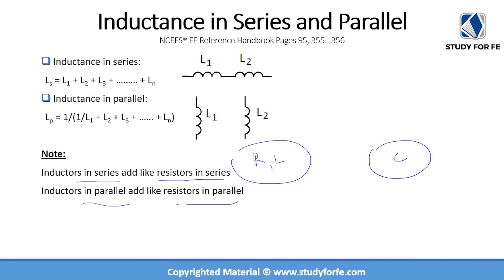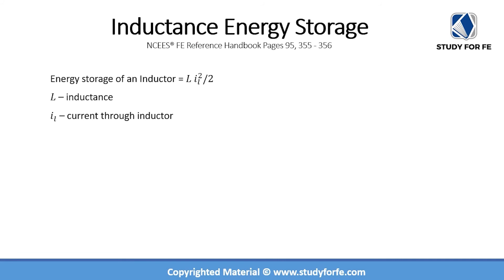Inductors store energy in the form of a magnetic field, and this is where magnetic permeability plays a role. The energy storage capacity of an inductor is given by E = LI² / 2, where I is the current through the inductor and L is the inductance. We can increase energy storage by increasing L or increasing I. Once an inductor is designed, L is difficult to change, whereas current is a controllable variable.